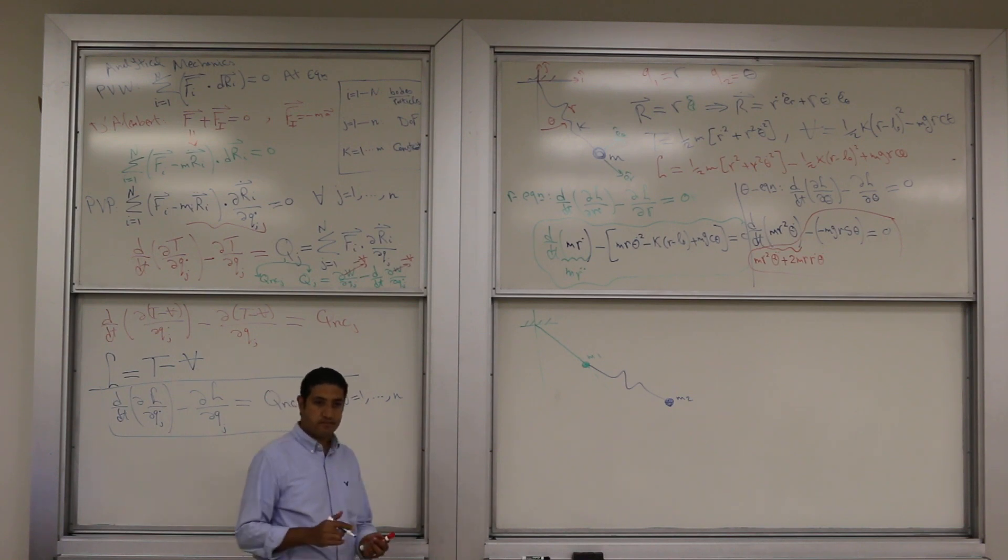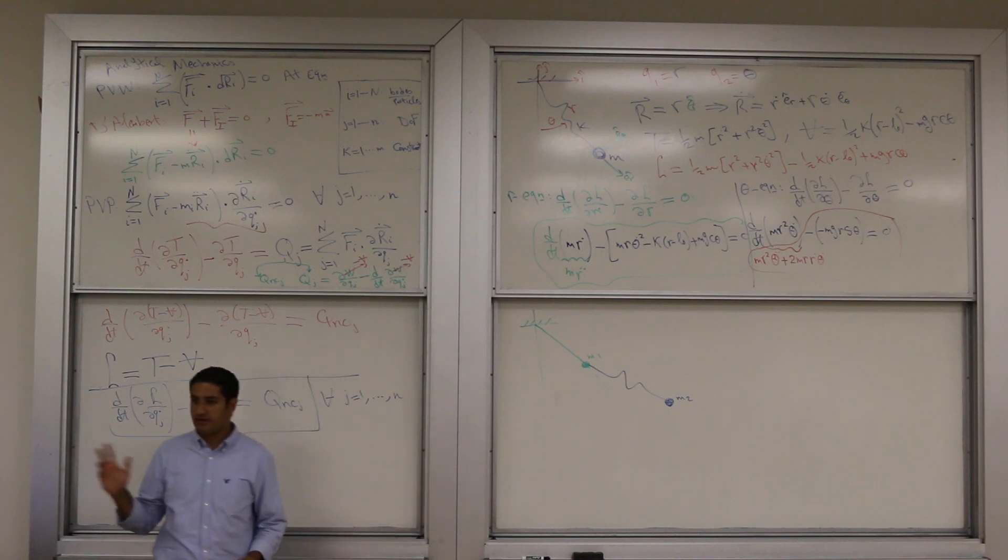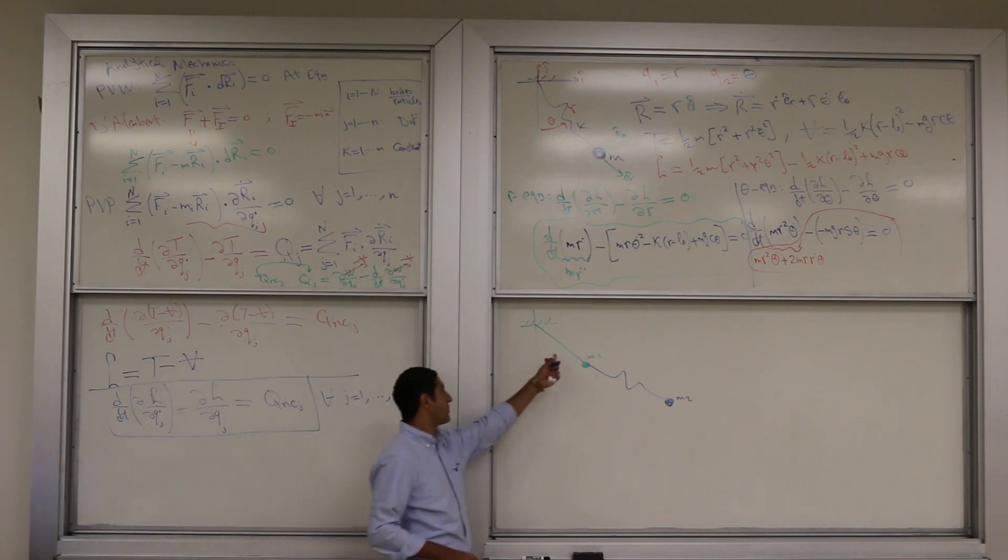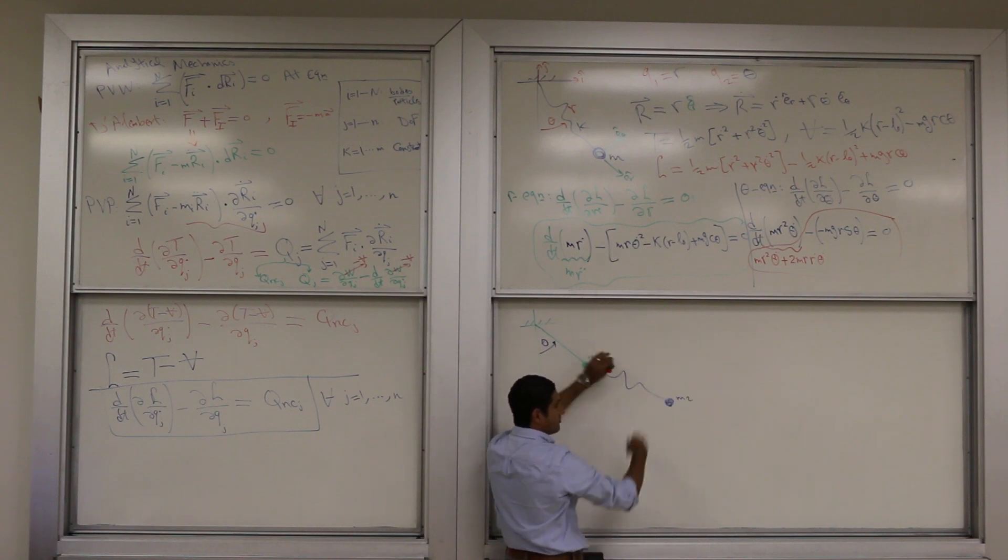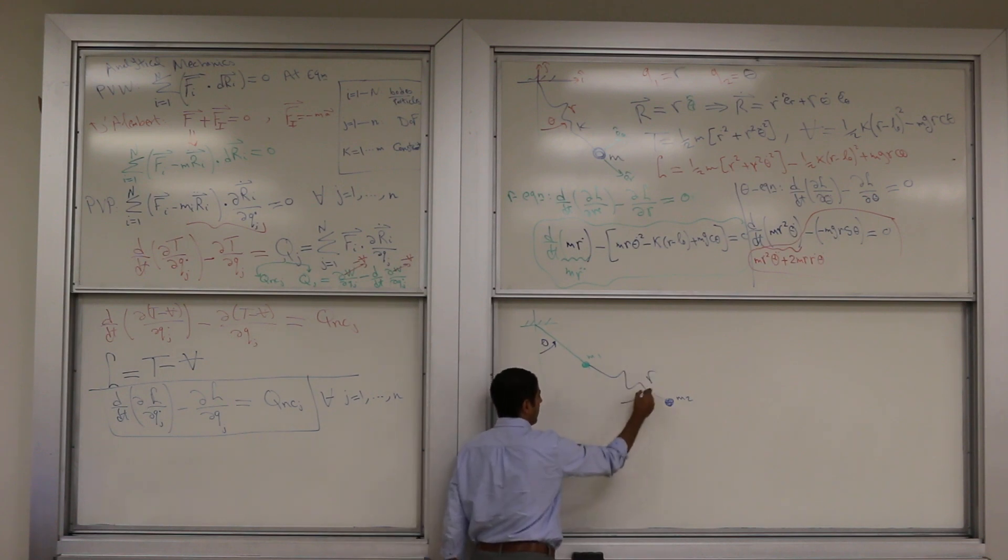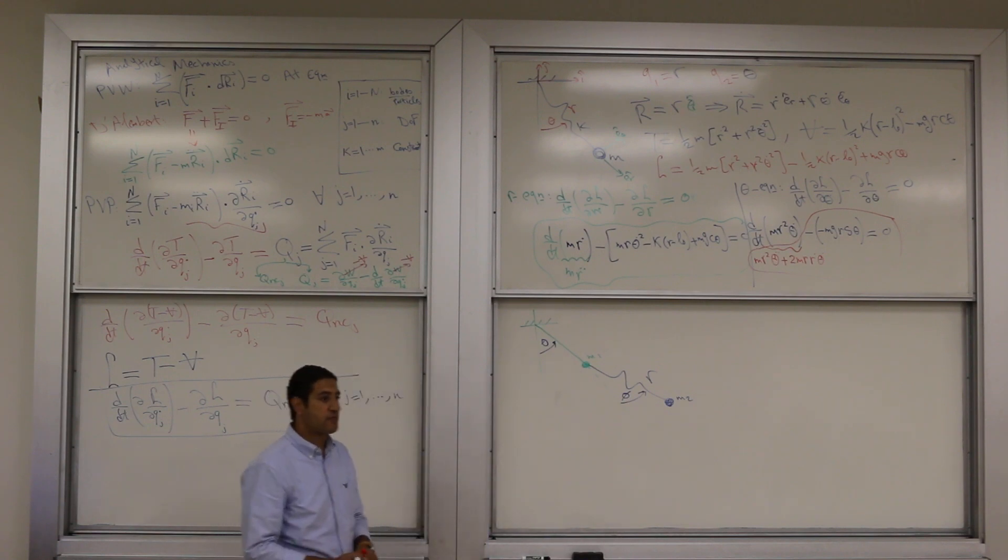How many degrees of freedom? Three. One degree of freedom for a simple pendulum here, let's call it theta. That takes care of the degrees of freedom of the first mass. Then the second mass has two degrees of freedom, R and another angle, call it phi. So three degrees of freedom.